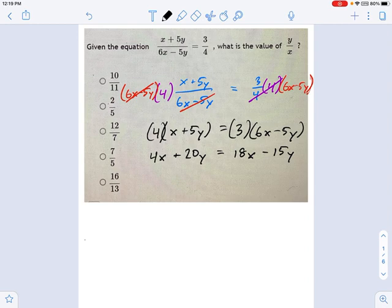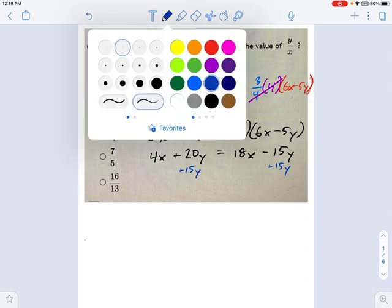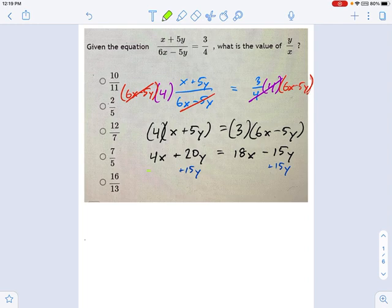So keep on going with this. Let's get all the y's on one side, all the x's on the other. I'm going to add 15y to each side. And I'm going to subtract 4x from each side. Let's see what we get. All right, 35y looks like equals 14x. That's kind of weird, but okay.